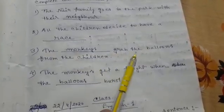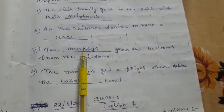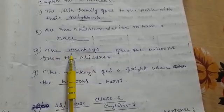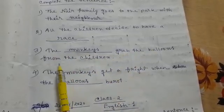Number 3. The dash grabbed the balloons from the children. The answer is monkey. The monkeys grabbed the balloons from the children.